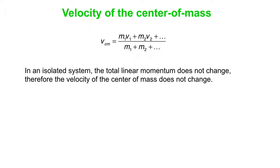Now for an isolated system, we know that the total linear momentum doesn't change. Isolated system means no net force, and therefore the velocity of the center of mass does not change. Here's that first connection we're making between momentum and center of mass.